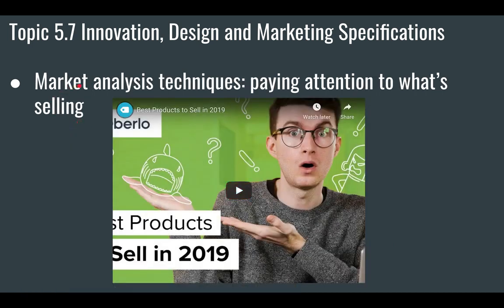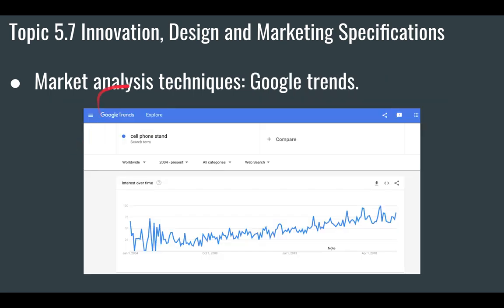One technique for doing a market analysis is paying attention to what's actually selling. One approach involves drop shipping, but this should not be the only technique you use for your market analysis — it's one technique, but not the main one. You can also use Google Trends, but you have to take that information for what it's worth, as it's not necessarily reliable.